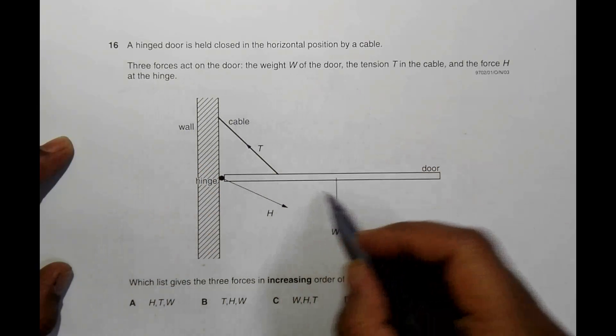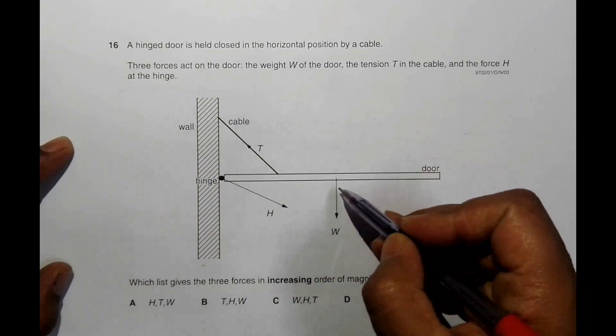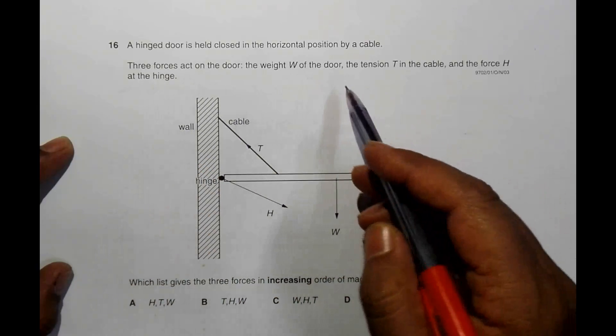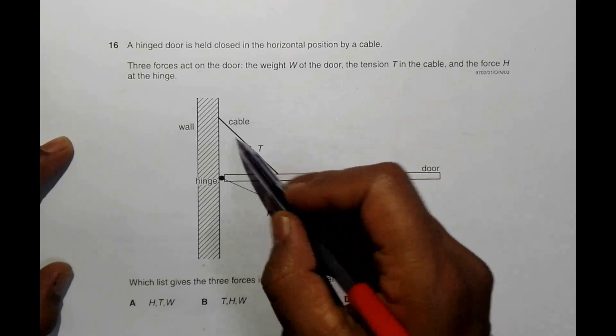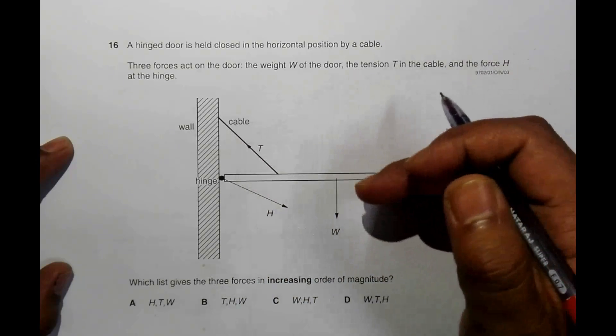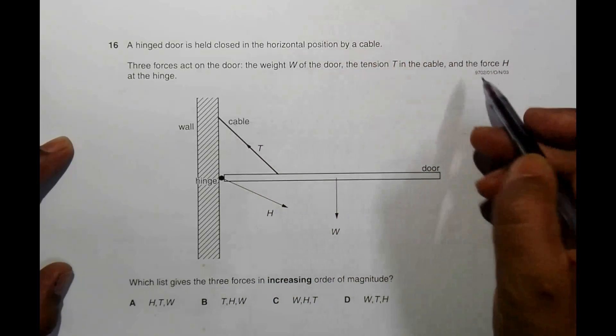So cable here. Three forces act on the door: the weight W of the door. So the door is considered to be uniform and the weight is acting exactly at the center.